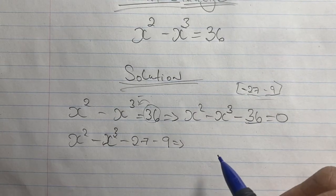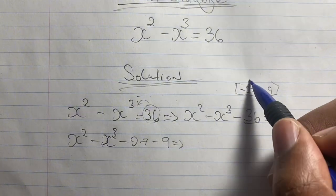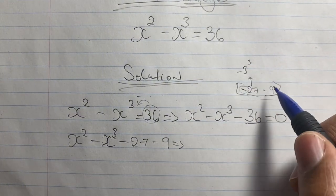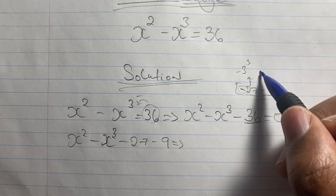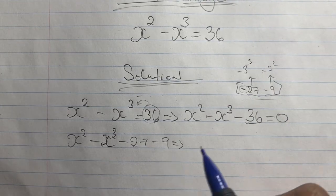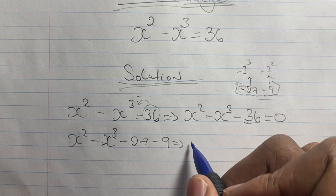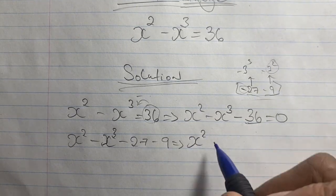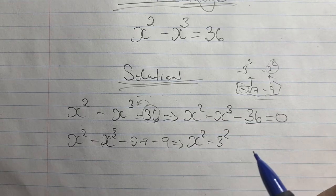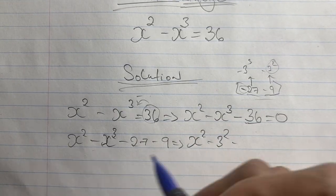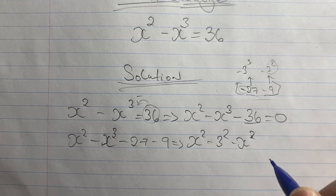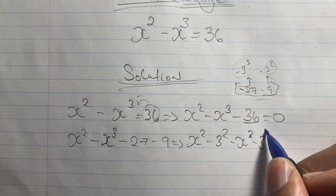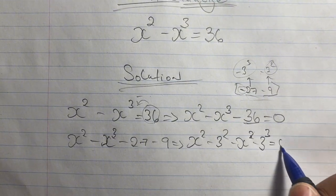We can further simplify this expression by noting that 27 is the same as 3 cubed (or negative 3 cubed), and 9 is the same as 3 squared (or negative 3 squared). So we rewrite our equation grouping x squared with negative 3 squared, and negative x cubed with negative 3 cubed, all equal to 0.